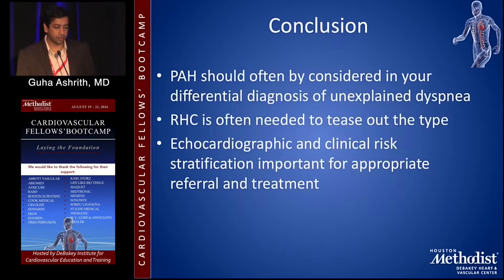In conclusion, PH should often be considered in your differential when patients have unexplained dyspnea. The first screening tool is an echocardiogram, and if PA pressures are over 40, right heart catheterization should be considered in all these patients so that you can differentiate what kind of pulmonary hypertension they have and guide treatment accordingly. Thank you very much.